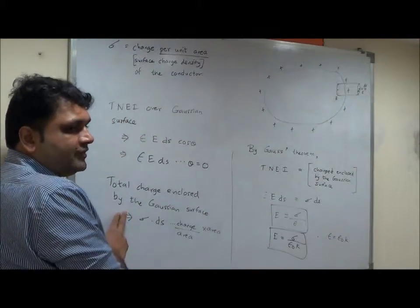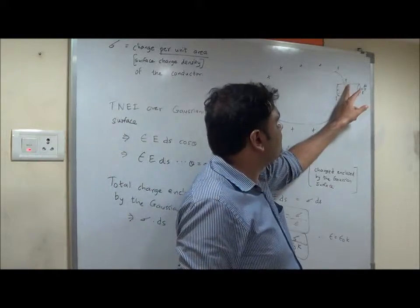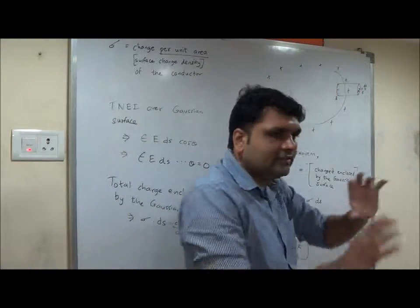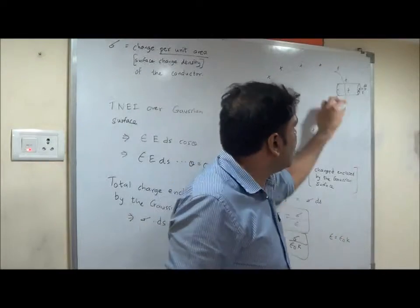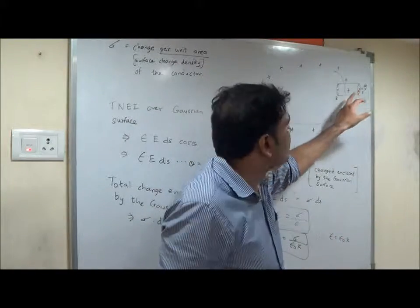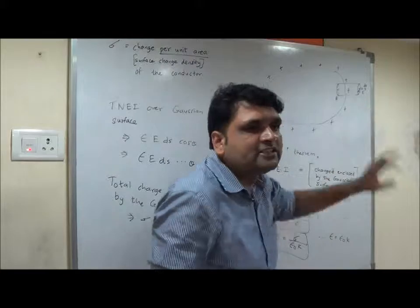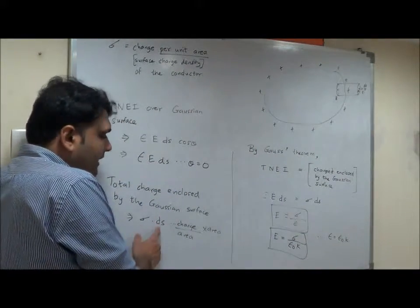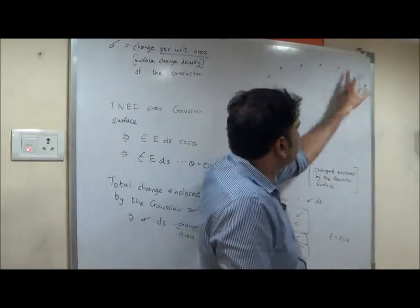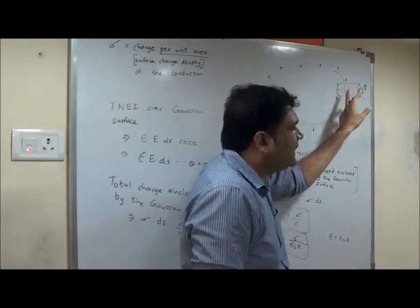Total charge enclosed by the Gaussian surface will be the charge on this much portion. Gaussian surface is protruding out of the conductor. So wherever it intersects the conductor, on that surface, whatever charge is present, is the charge enclosed by the Gaussian surface, which is sigma into DS. Sigma was charge per unit area of this surface into area DS.